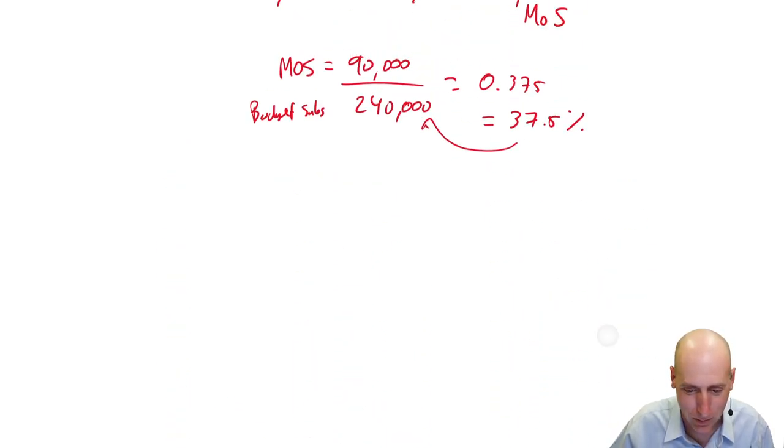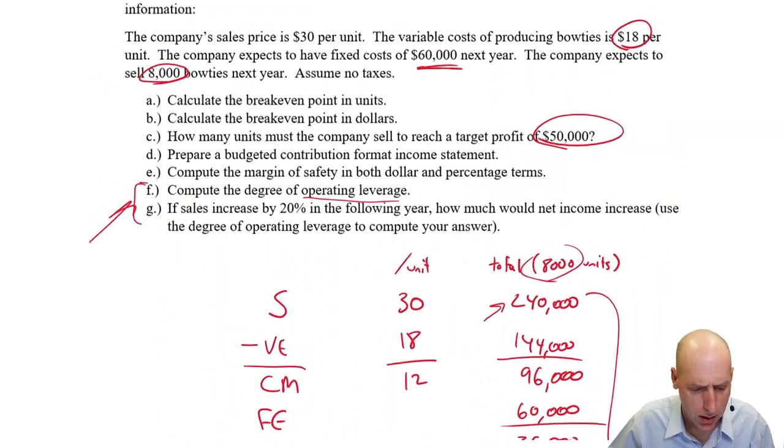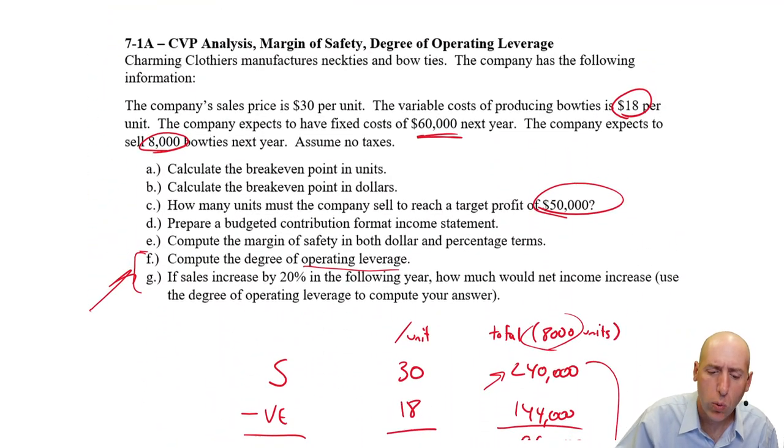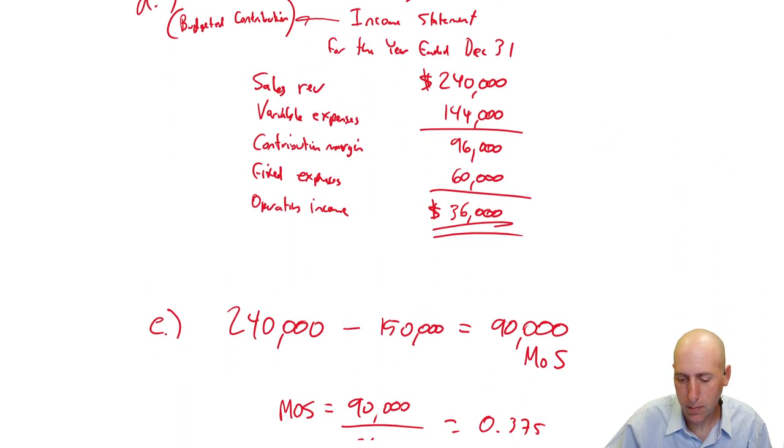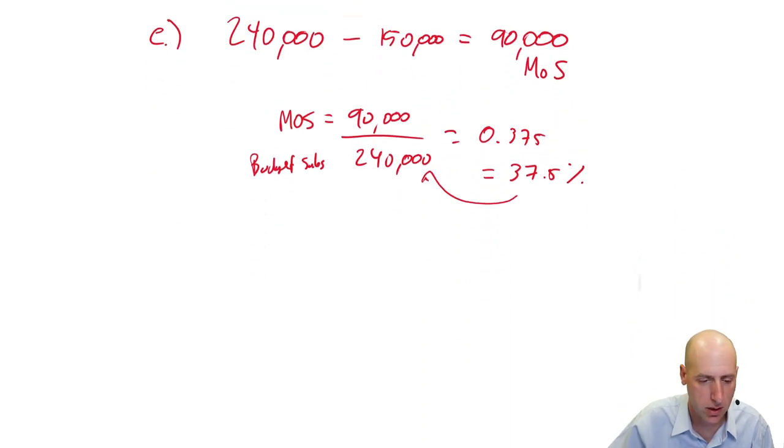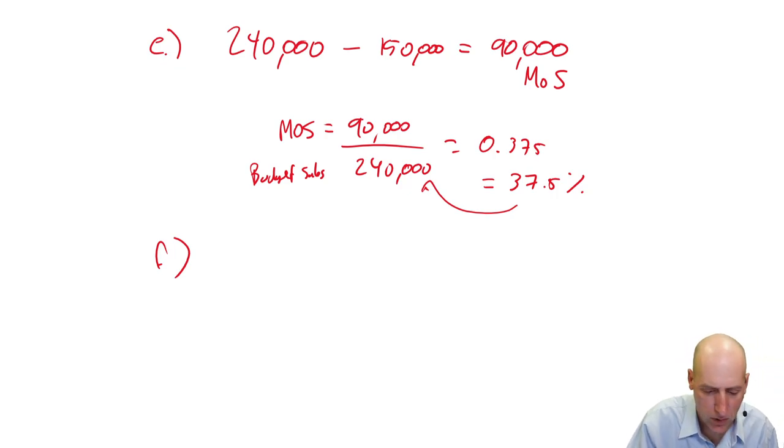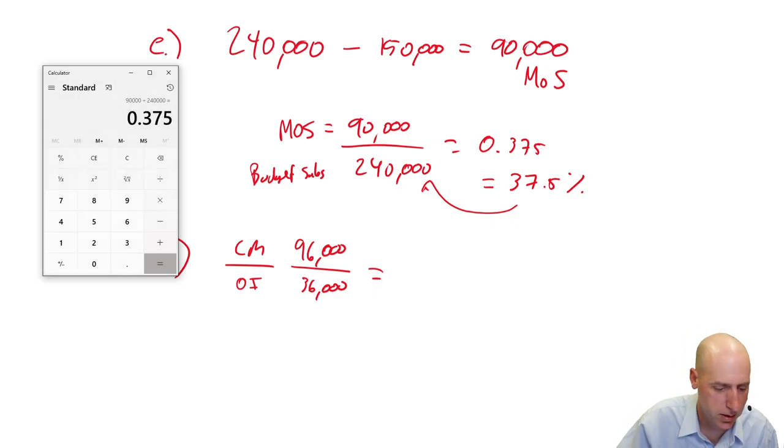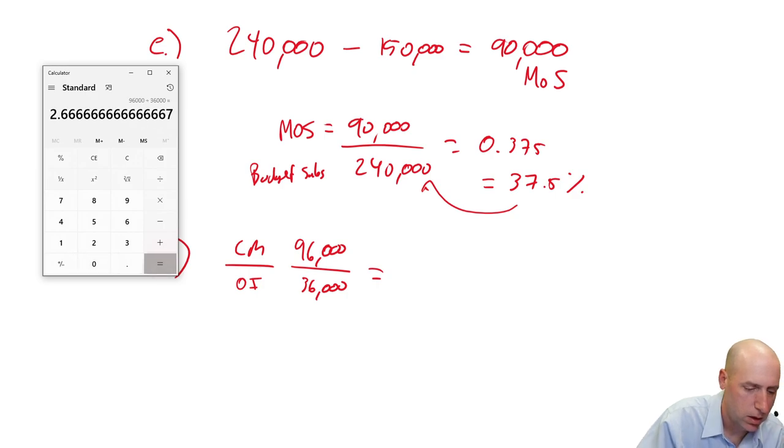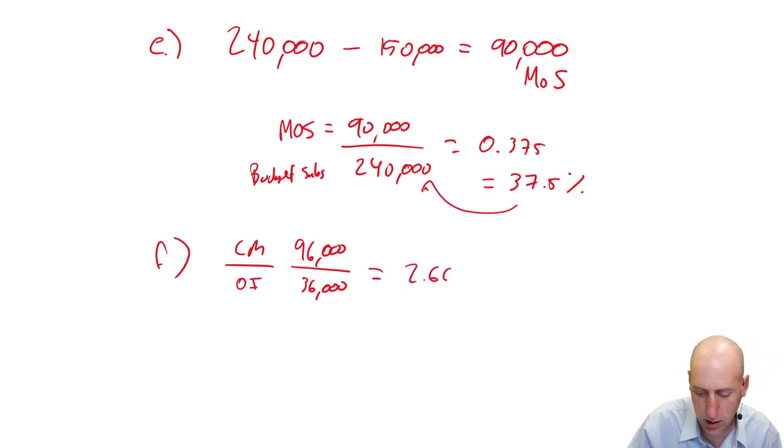So F says compute the degree of operating leverage. We want to compute that so it's CM divided by net income, net operating income here. So our CM is 96 based on our budget. Our operating income is 36,000. So this is F. 96,000 was our CM. Our operating income or net income was 36,000. We've assumed no taxes, so it's the same as net income. There were no taxes. 96 divided by 36. 2.667.